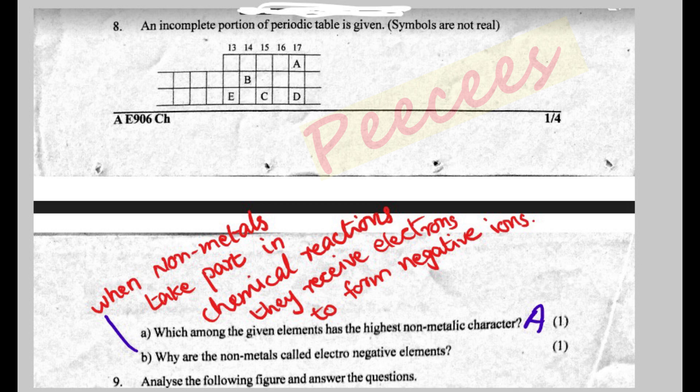Non-metals are called electronegative elements. When non-metals take part in chemical reactions, they receive electrons.